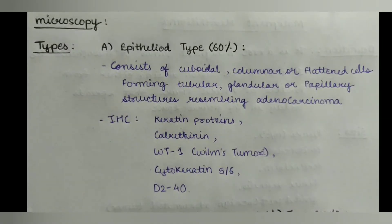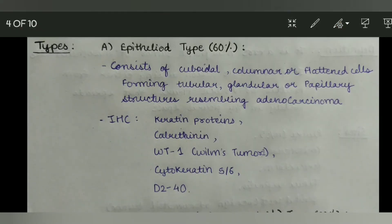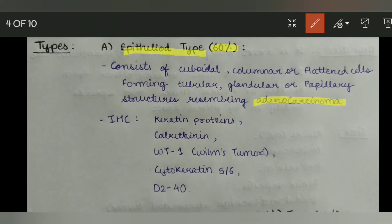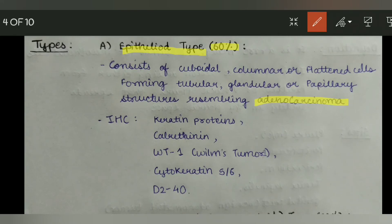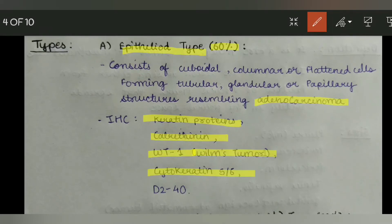Under microscopy, there are three types of cells. The first is the epithelioid type, seen in 60% of individuals. It consists of cuboidal, columnar, or flattened cells forming tubular, glandular, or papillary structures resembling adenocarcinoma. Immunohistochemistry staining is positive for keratin proteins, calretinin, WT1 (Wilms tumor 1), cytokeratin 5/6, and D2-40.